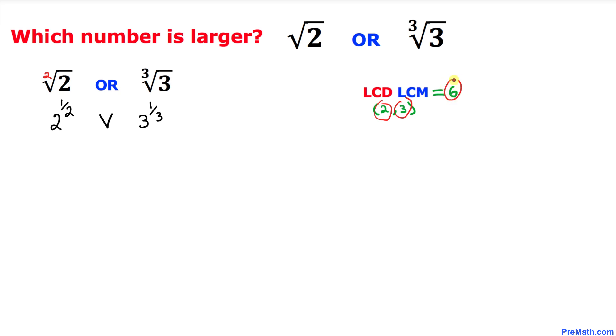going to be 6. So therefore, we are going to take the power of 6 on both sides, on both numbers. Now let's go ahead and simplify this thing. That's going to become 2 power this 1 over 2